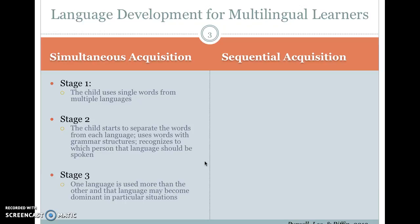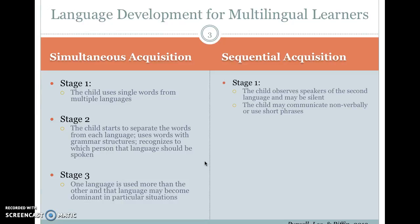Then one language is used more than the other, and that language often becomes dominant in particular situations. So often for students living in the United States, this becomes English. If you are learning something sequentially — for example, you speak one language and we're all going to go to Finland and we're learning Finnish — what's going to happen?